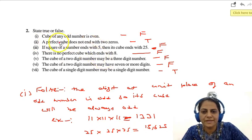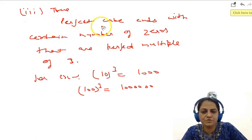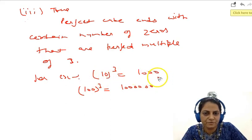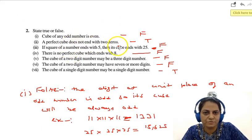Now let's see the next part. A perfect cube does not end with 2 zeros. This statement is true because whenever we find the perfect cube, suppose of 10, we will get 3 zeros. Suppose of 100, we will get 6 zeros. So the number of zeros we get will be a multiple of 3. So it means perfect cube does not end with 2 zeros.